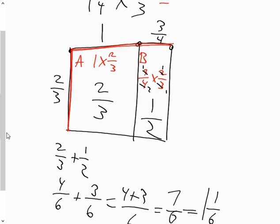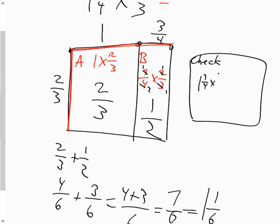Okay. How to check my answer. Let's do a check over here. Check. So it's one and three quarters multiplied by two thirds, which is seven quarters multiplied by two thirds, which is 14 over 12, which is one and two twelfths, which in lowest terms...